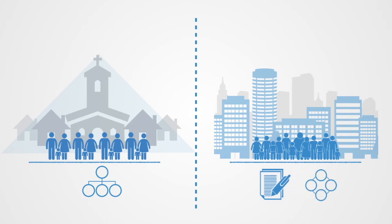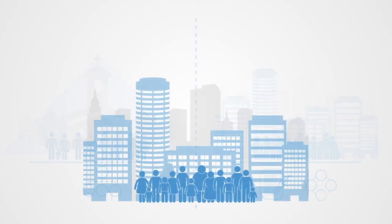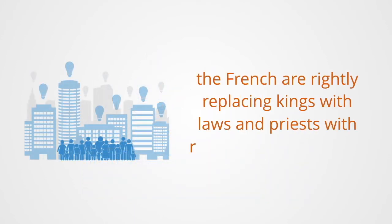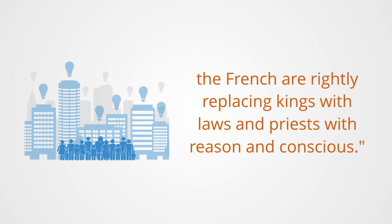The modern era has witnessed a massive rise of rational institutions as they have become the dominant institutional technology of modern societies around the world. Richard Price, the English philosopher and author, in talking about the ongoing French Revolution of his time, summarized this when he said, 'The French are rightly replacing kings with laws and priests with reason and conscience.'